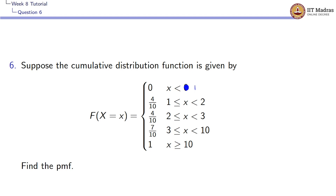Hello again. Let us look at the final question in the week 8 tutorial. Suppose the cumulative distribution function is given by this function: it is 0 for x less than 1; 4/10 for 1 ≤ x < 2; 4/10 again for 2 ≤ x < 3; 7/10 for 3 ≤ x < 10; and equals 1 for x ≥ 10.